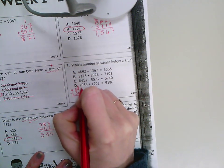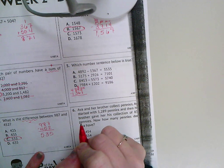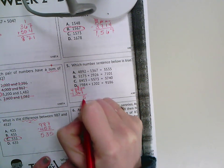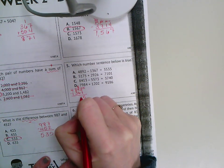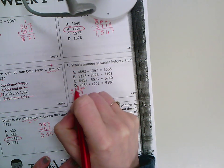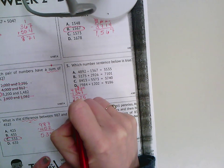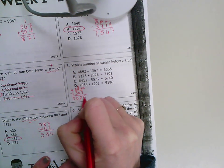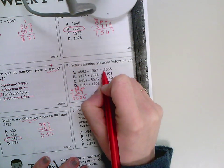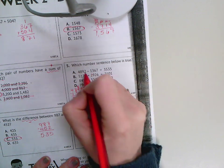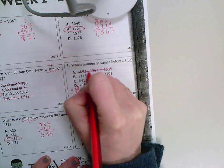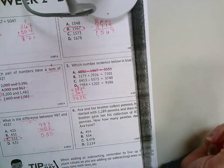So if I borrow, that 9 becomes an 8, that 2 becomes a 12. 12 minus 7, we just said that was 5. 8 minus 6 is 2, 8 minus 3 is 5, and 4 minus 1 is 3. So I get 3,525. This says 3,535, so the borrowing must have been wrong when someone did that one. So that one does not work.